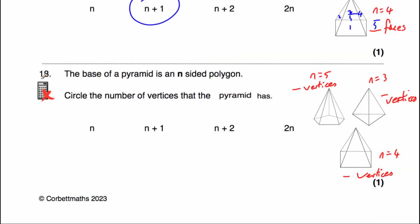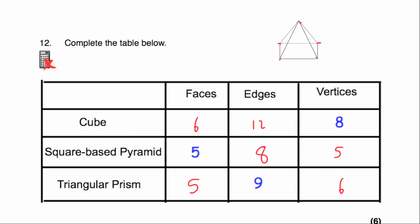Question number 18, our last question: circle the number of vertices the pyramid has. A triangular base pyramid (n=3) has 4 vertices. A square base pyramid (n=4) has 5 vertices. A pentagon base pyramid (n=5) has 5 on the bottom plus 1 on the top = 6 vertices. The number of vertices is one more than the number of sides of the base polygon, so the answer is n+1.